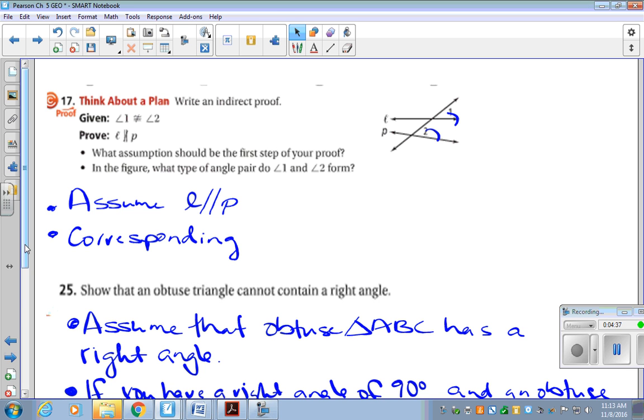So for the homework, number 17, we want to write an indirect proof. So if we are given that angle one is not congruent to angle two, we want to prove that line L is not parallel to line M. So the first thing we're going to assume is that the lines are parallel. It's opposite of what you're trying to prove.